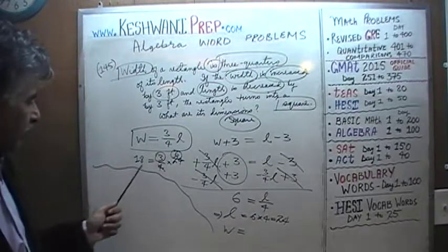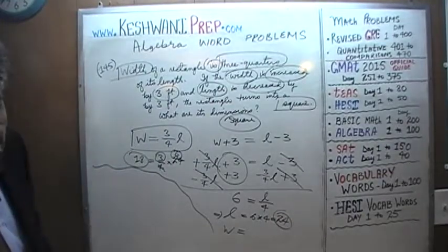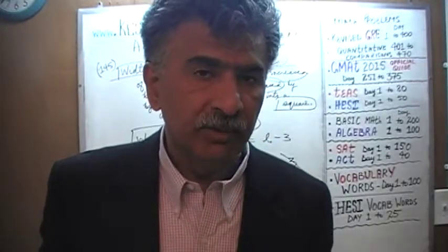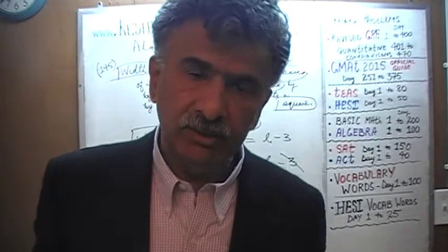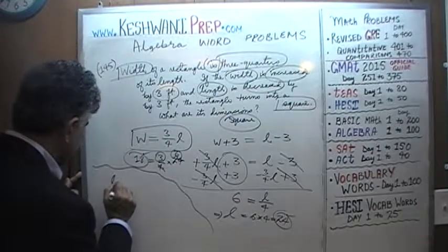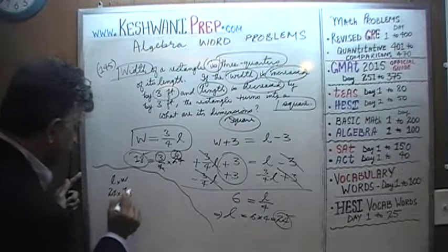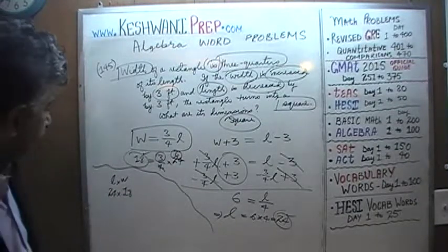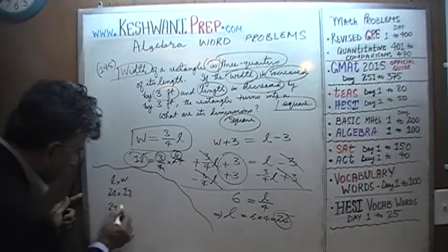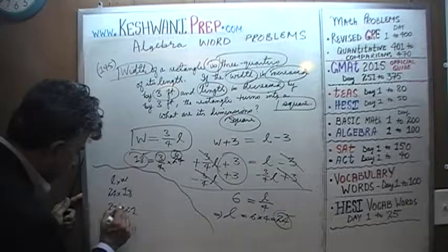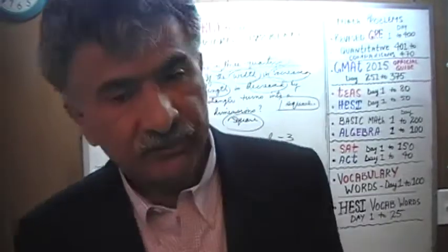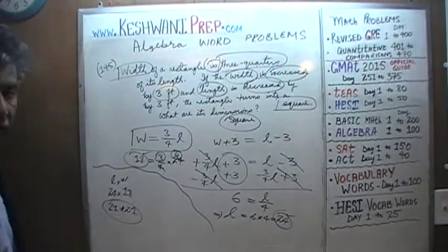The original dimensions of the rectangle must have been 18 by 24. As always, let's verify our work — it only takes a few seconds and it's worth spending that extra time. What we are claiming is that the length and width are 24 and 18. If you decrease the length by 3 feet, it becomes 21, and if you increase the width by 3 feet, it becomes 21. So it does in fact become a square — 21 by 21. These dimensions, 18 by 24, must be correct.